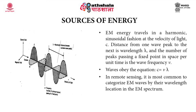Electromagnetic energy is generally used for remote sensing studies of Earth's surface features. This electromagnetic energy travels in a harmonic sinusoidal fashion at the velocity of light, that is 3 × 10⁸ meters per second. As can be seen in the figure, the distance from one wave peak to the next, or from one trough to the next, is known as wavelength, and the number of peaks passing through a fixed point in space per unit time is called wave frequency. In general, these electromagnetic radiations obey the wave equation C = νλ. In remote sensing, it is most common to categorize electromagnetic energy waves by their wavelength location in the electromagnetic spectrum.